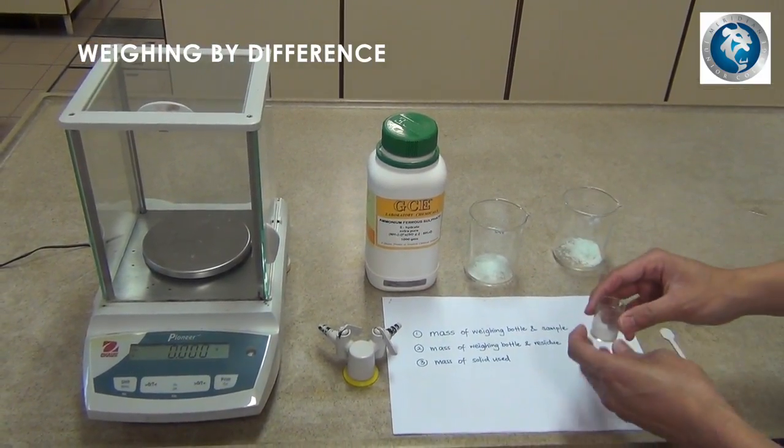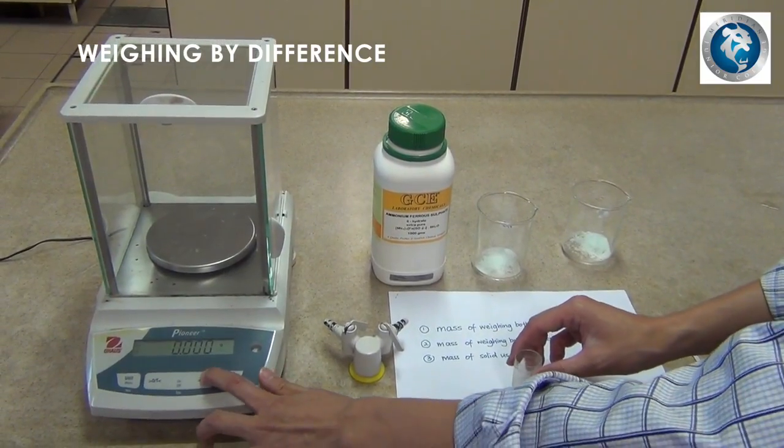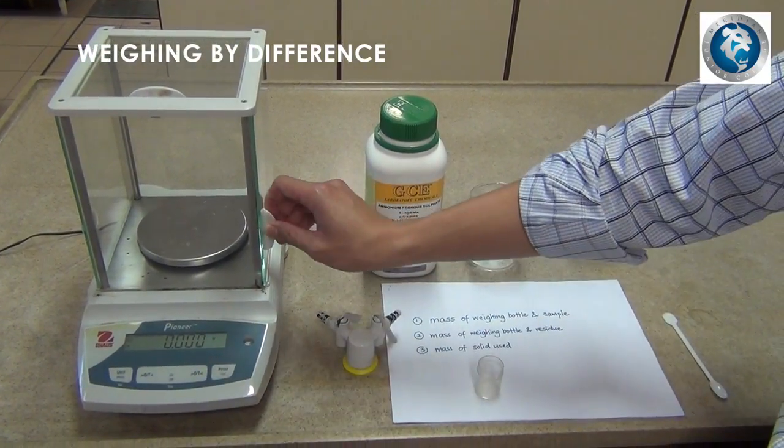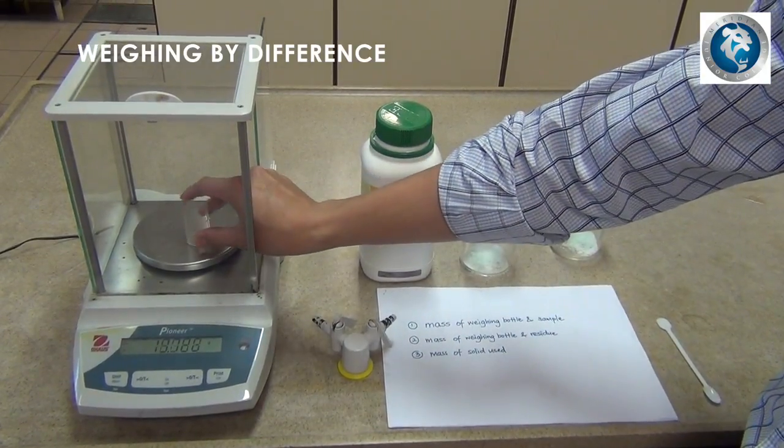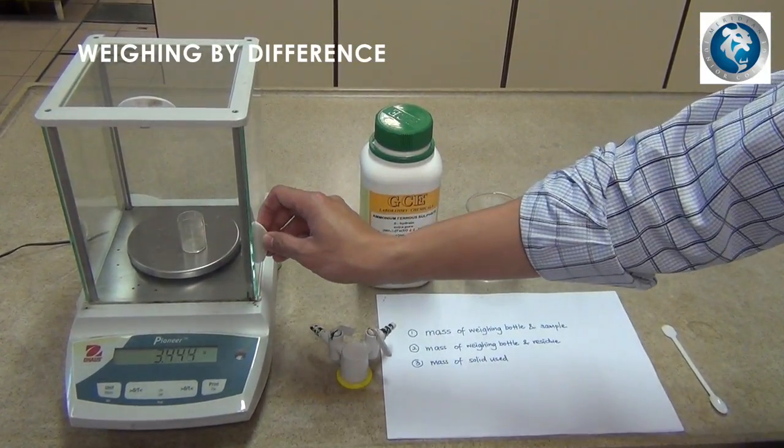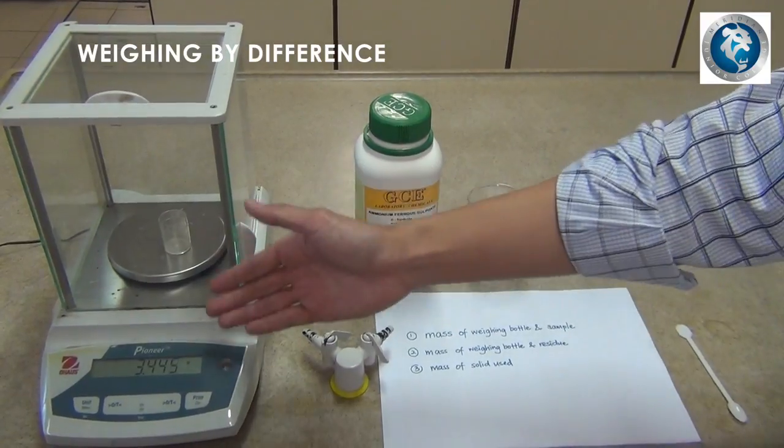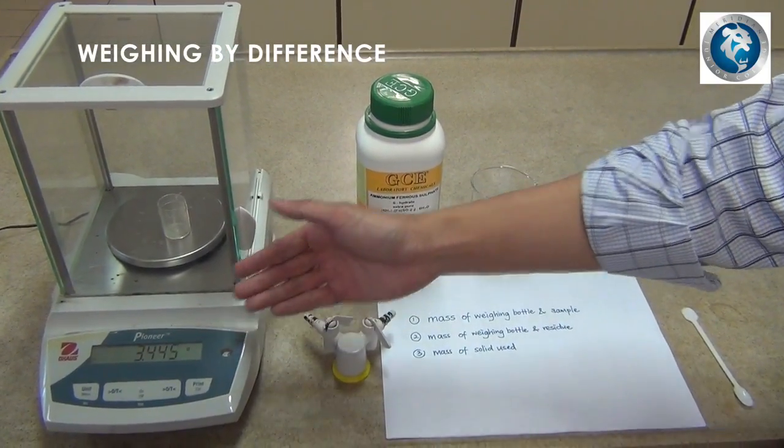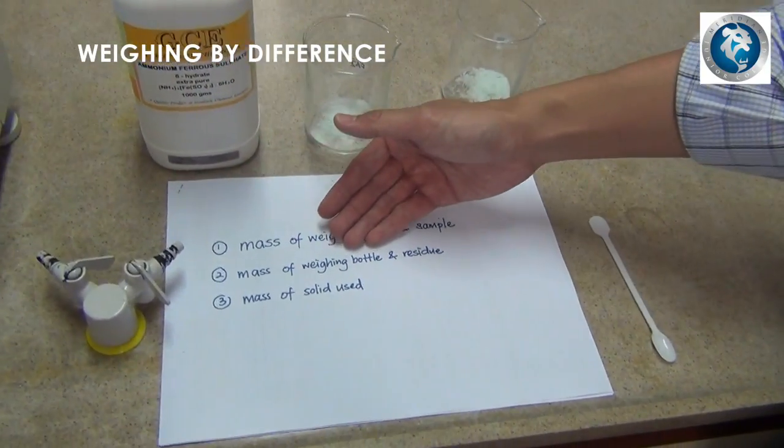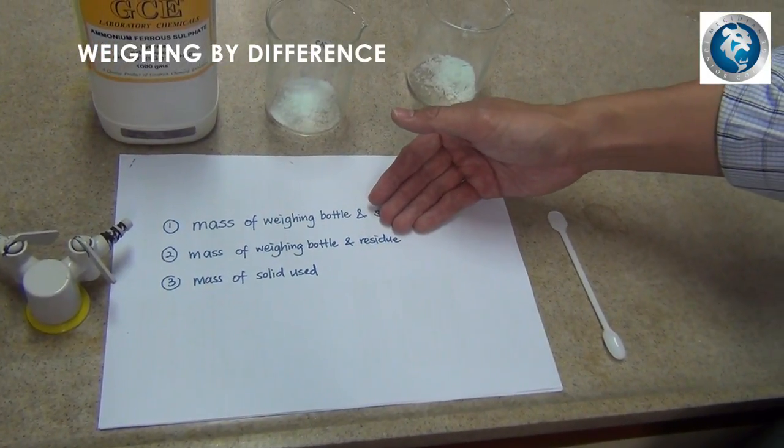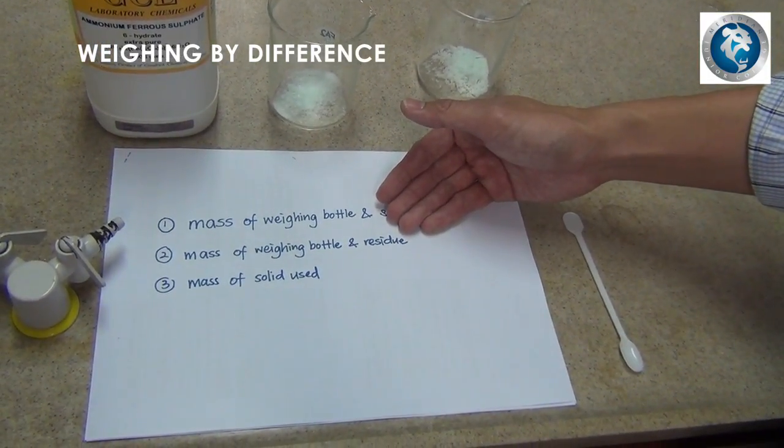After this is done, tare the weighing balance again. Place the weighing bottle back into the weighing balance. The reading that you see on the weighing balance would be the mass of weighing bottle and residue. And you would need to record this reading in your lab reports.